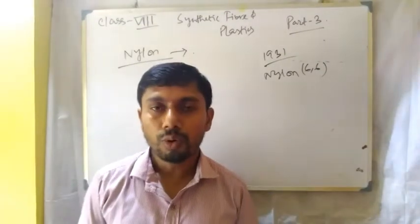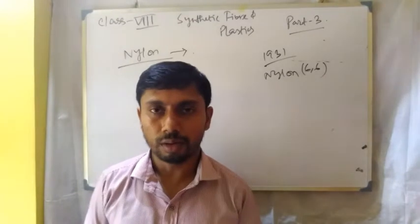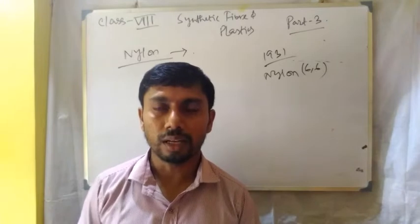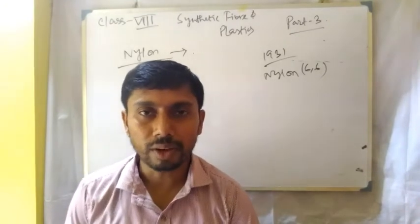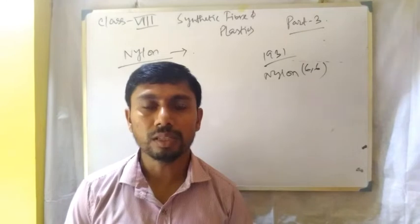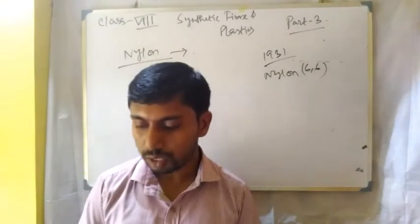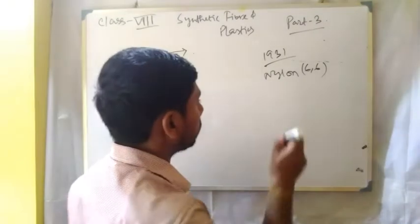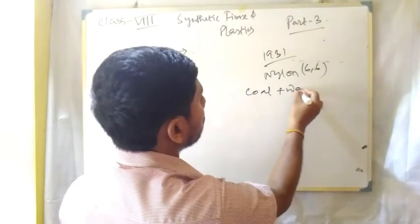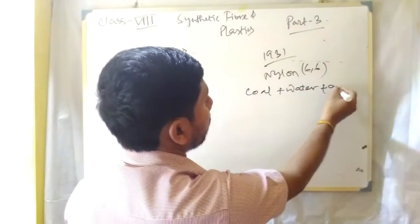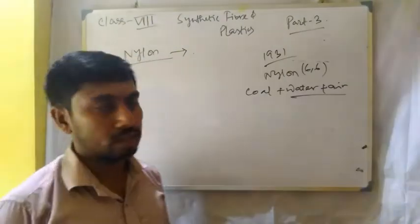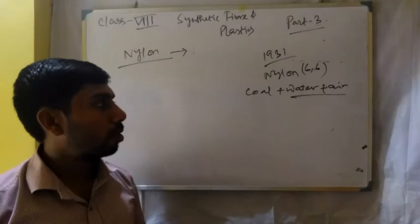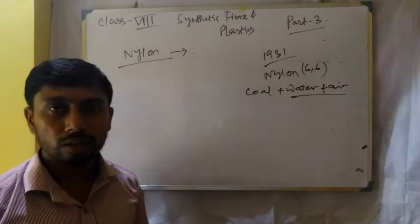Unlike rayon, no plant fibers are used in making nylon. It is totally chemically made. The composition used to make nylon is coal, water, and air — these are the three components from which we can produce nylon.